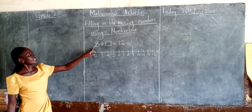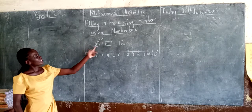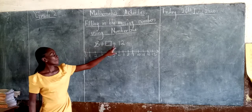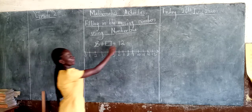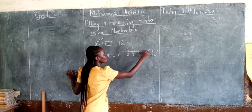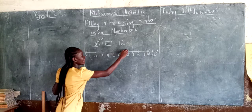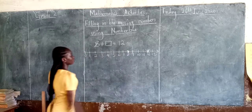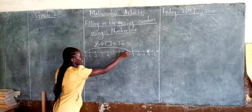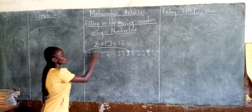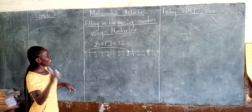Our question is 8 plus dash is equal to 12. If you add a number to 8, it will give us 12. So that number is what you are going to look for. Let's mark 12, then mark 8. From zero to eight, how many steps? Eight steps.